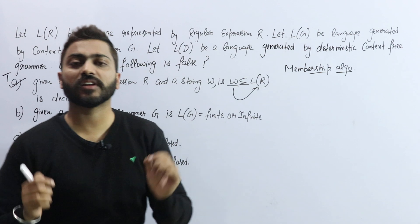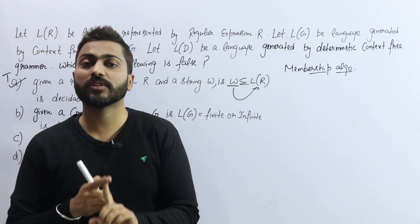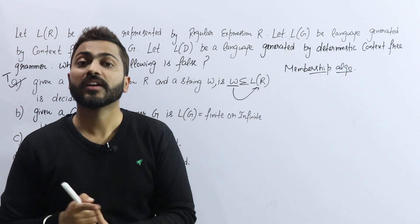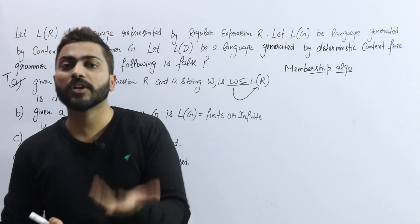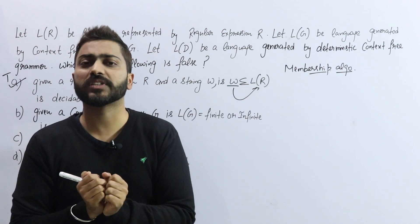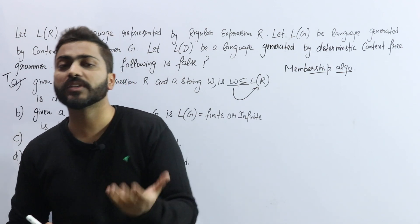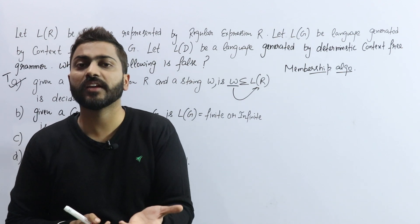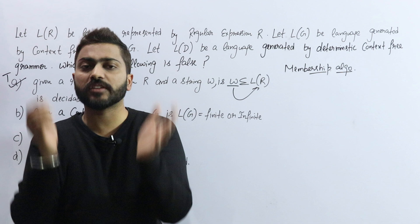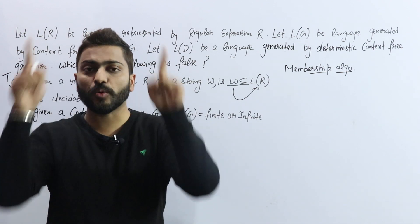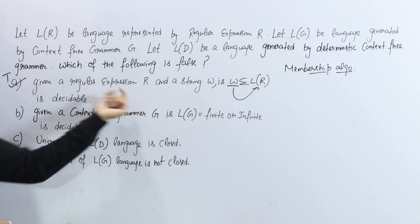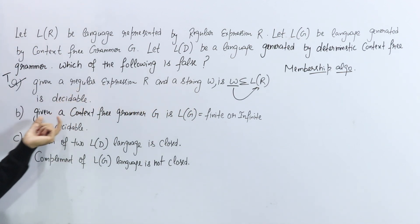Even if we talk about regular languages, we have many other methods and algorithms: membership algorithm, finiteness, infiniteness, emptiness, completeness, ambiguity. These methods allow you to check if you have a regular language — whether it is complete, infinite, or equal to sigma star. All these are decidable for regular languages.